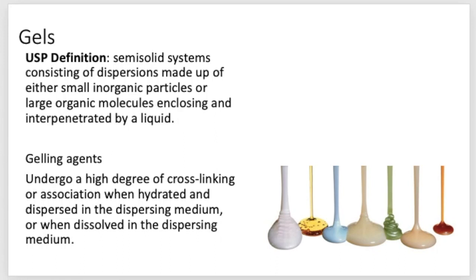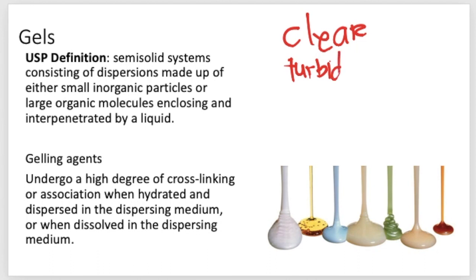Now let's move on to gels. As defined by the USP, gels are semi-solid systems consisting of dispersions made up of either small inorganic particles or large organic molecules, enclosing and interpenetrated by a liquid. They are semi-rigid systems. Some gels are as clear as water while others are turbid, depending on the ingredients added — the ingredients may not be completely molecularly dispersed or completely soluble, making them turbid.